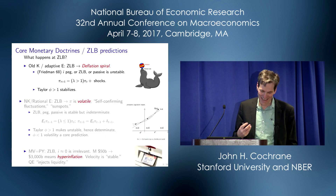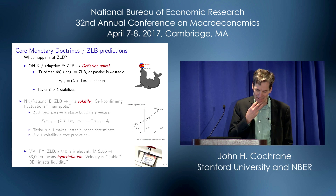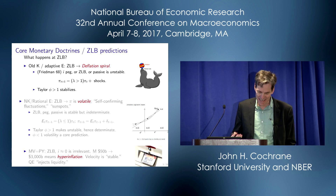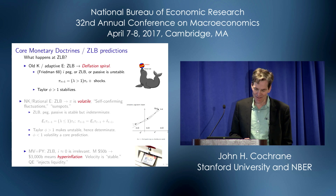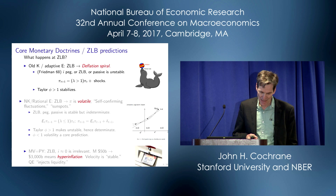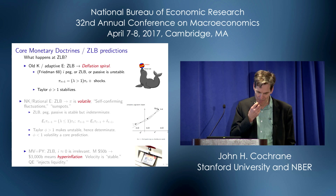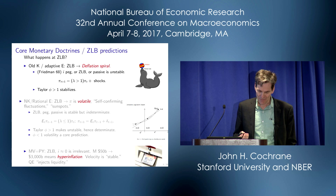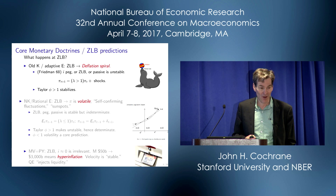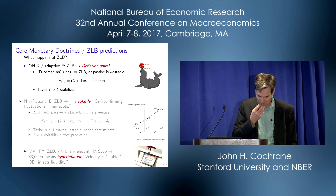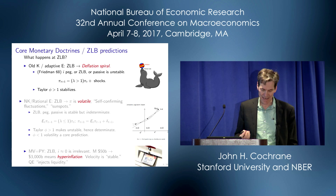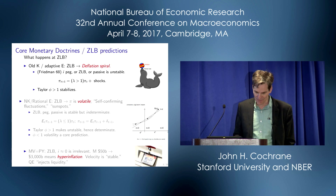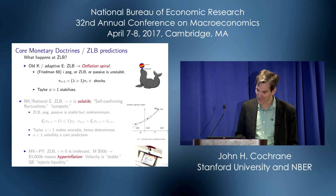That's a surprising answer because our theories predicted big events. Old Keynesian adaptive expectations models predicted that a deflation spiral would break out at the zero bound. The zero bound is like an interest rate peg — unstable, like a ball on a seal's nose. The Taylor rule usually fixes that instability: if the Fed moves interest rates more than one-for-one with inflation, the same way the seal moves his nose under the ball, then the Fed can stabilize inflation. But when the interest rate can't move anymore, as happens at the zero bound, the inflation or deflation spirals away and the ball falls off the seal's nose.